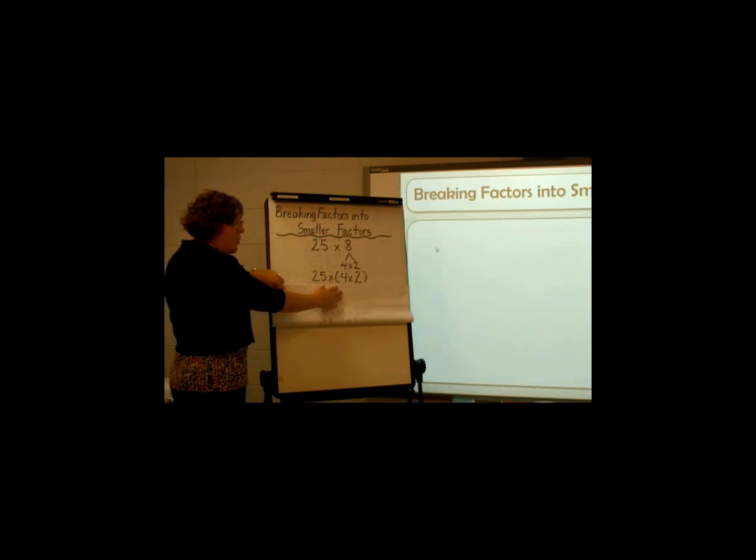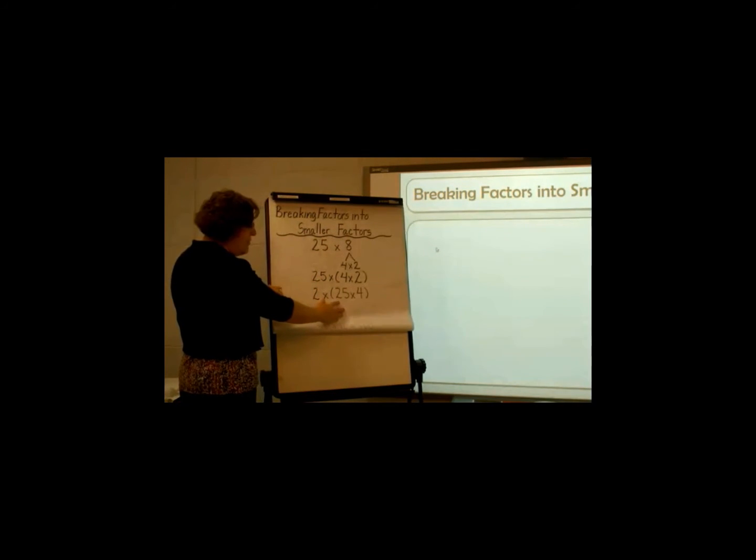Now I also know that the associative property allows me to change the order of the factors that I'm multiplying. So I can change the order of those factors and make my new problem 2 times 25 times 4.